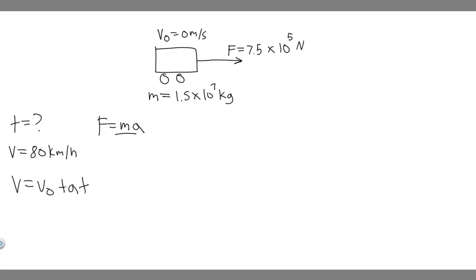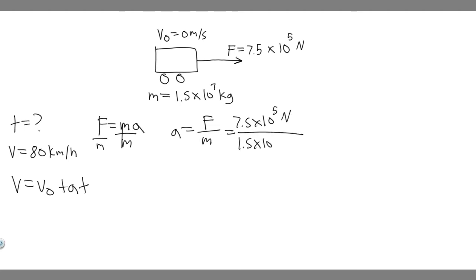To solve for acceleration, we divide both sides of F = ma by m. So the acceleration is the resultant force divided by the mass. In this case, the force is 7.5 times 10 to the 5 newtons, and the mass is 1.5 times 10 to the 7 kilograms. So do 7.5 times 10 to the 5 divided by 1.5 times 10 to the 7, and you'll get 0.05 meters per second squared — since newtons divided by kilograms gives meters per second squared.